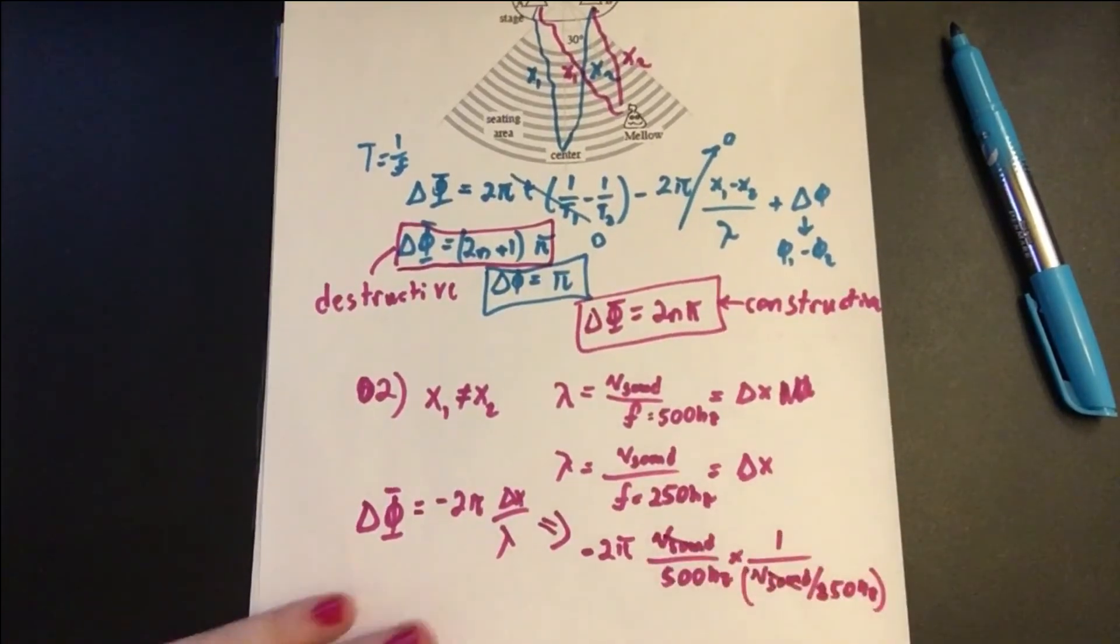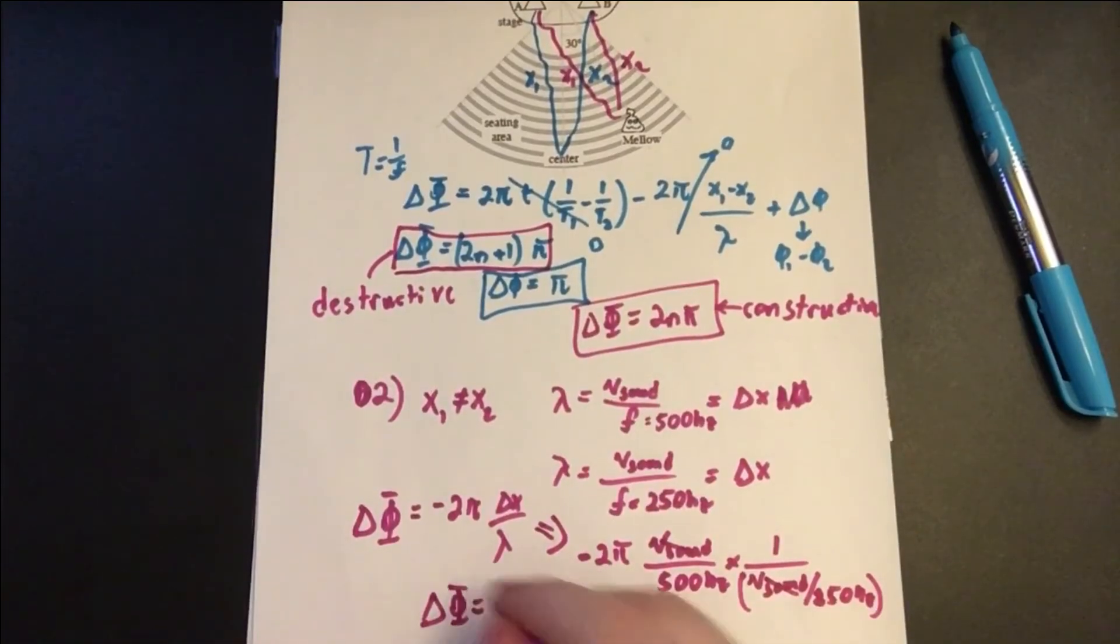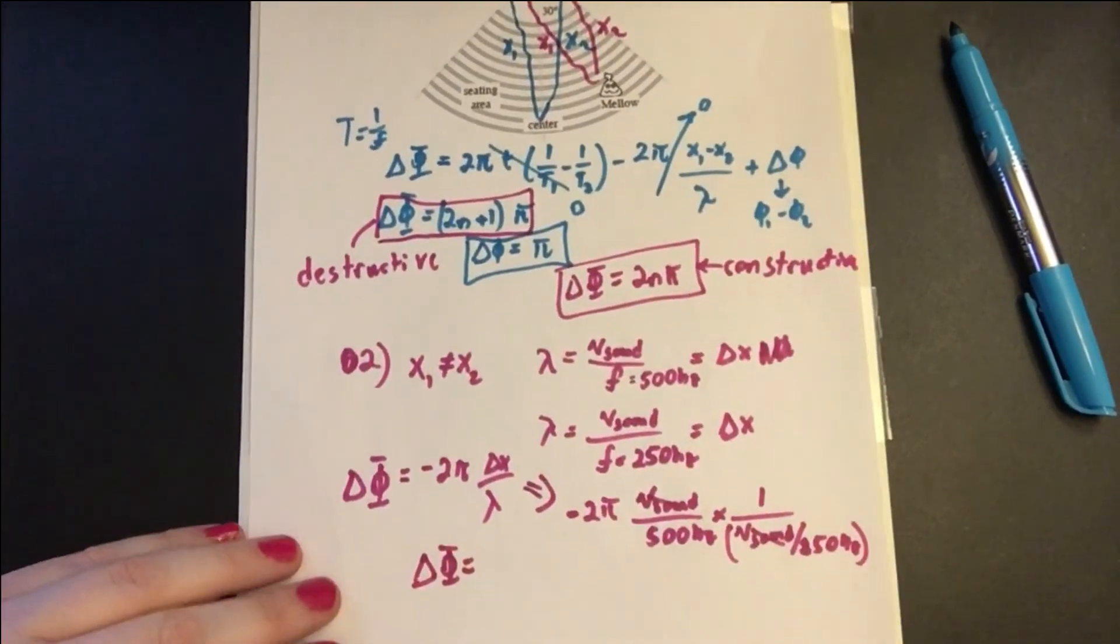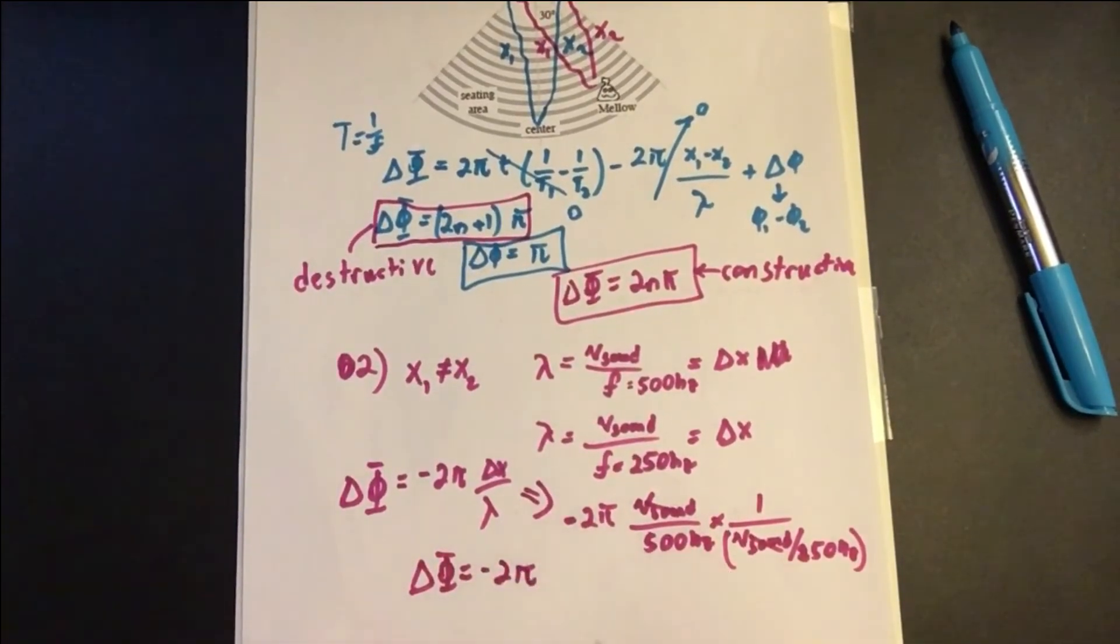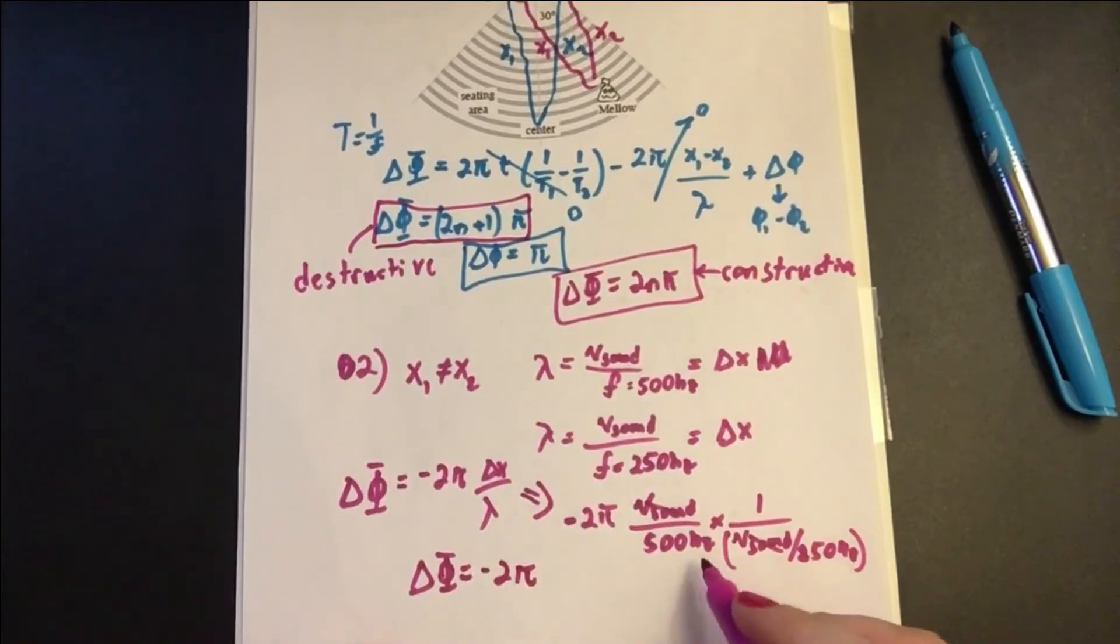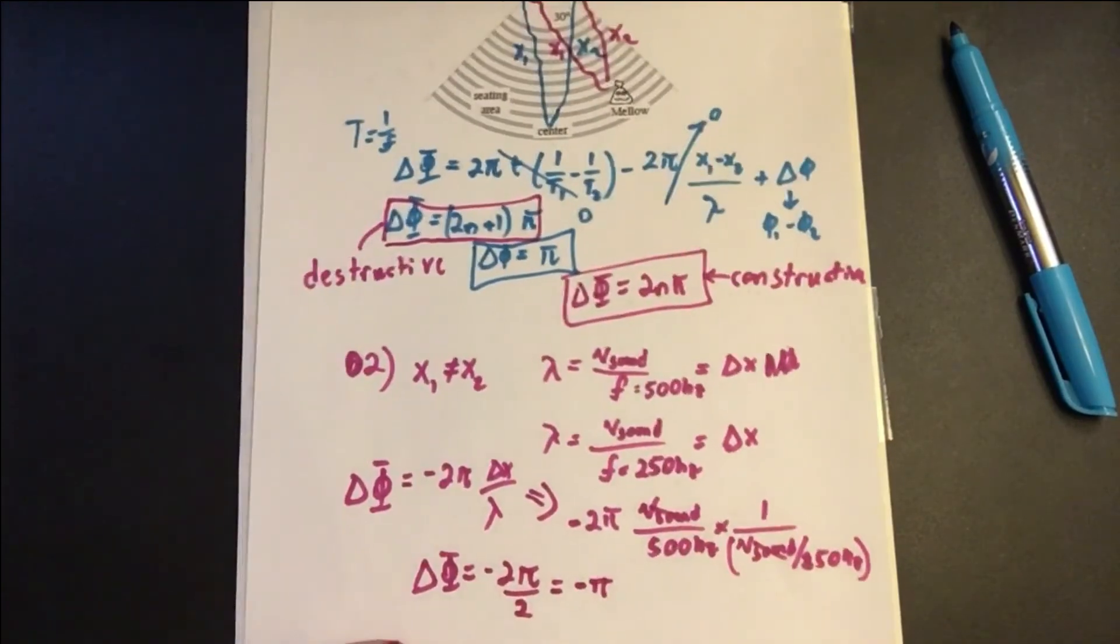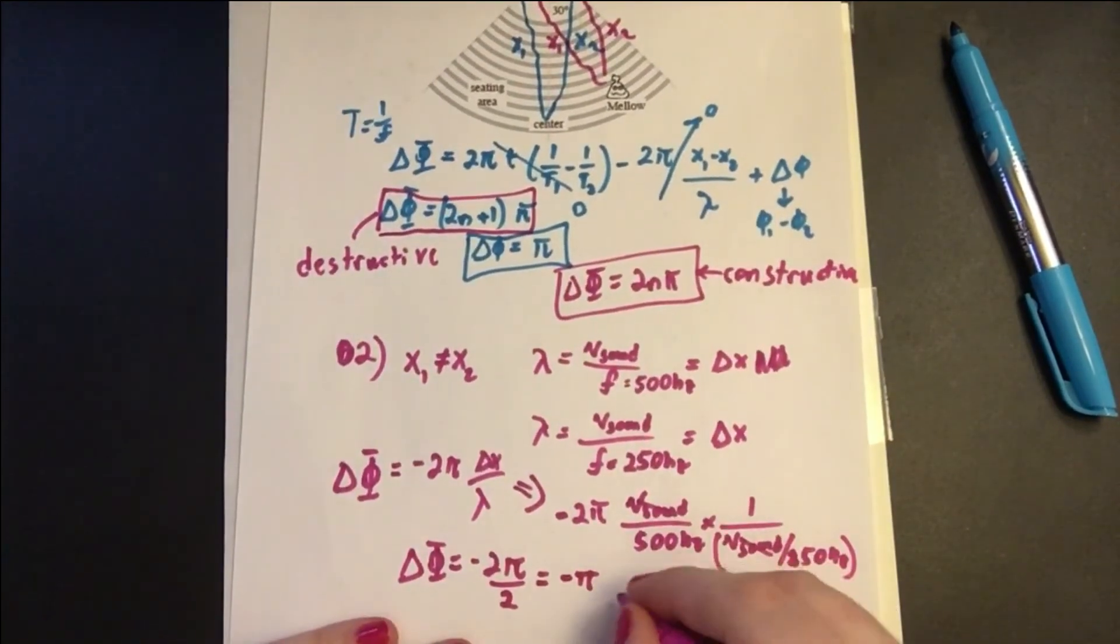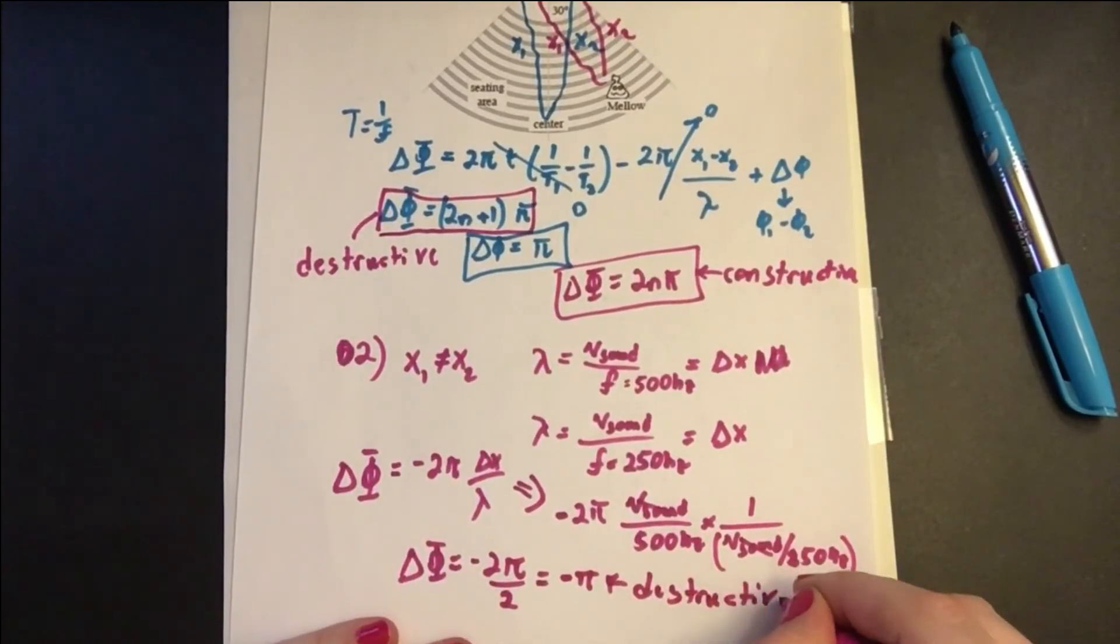So if we multiply this out, the velocities of sound cancel. And we get the change in the Δφ is -2π. 250 divided by 500 is 1 half. So divide it by 2. So this gives us -π, which means she experiences destructive interference.